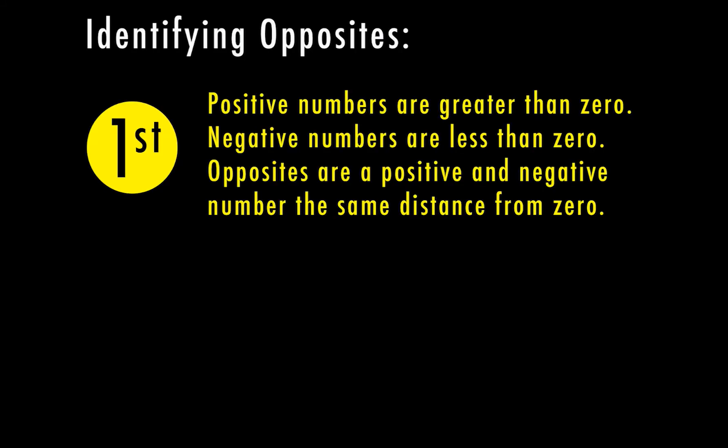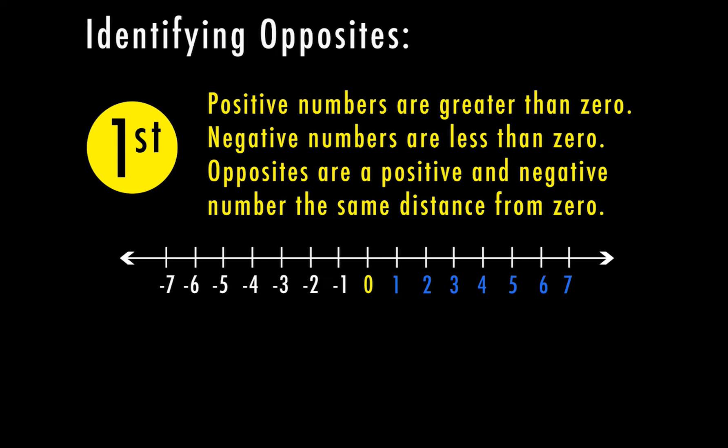Before we move on to the actual lesson going over absolute value, let's talk about identifying opposites. We have positive numbers and negative numbers. Positive numbers are greater than zero — on a number line, the positive numbers are shown in blue. Negative numbers are less than zero. Zero is neither negative nor positive, it's just in the middle. Everything to the right of zero is positive, and everything to the left of zero on a number line is negative.